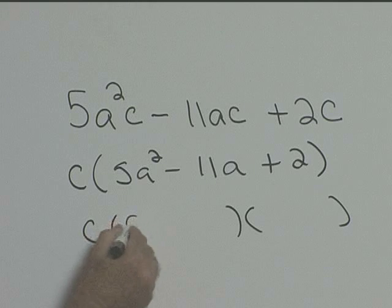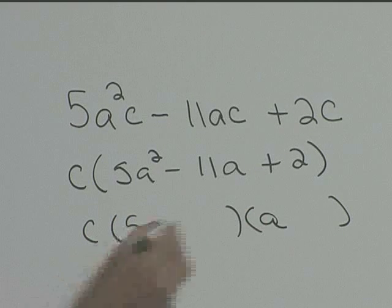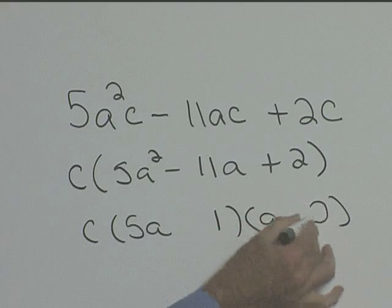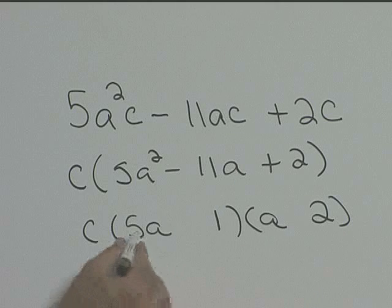The factors of 5a² are 5a and a. The factors of 2 are 2 and 1. If we put 1 here and 2 on the outside, inside terms give us 1a, outside gives us 10.